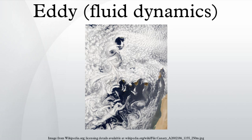Eddies which are between about 10 and 500 kilometers in diameter, and persist for periods of days to months, are known in oceanography as mesoscale eddies. Mesoscale eddies can be split into two categories: static eddies, caused by flow around an obstacle, and transient eddies, caused by baroclinic instability.